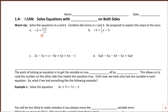Now that we've got a pretty good handle on how to solve one and two-step equations, we're going to take a look at some that are a little bit more complicated. So in section 1.4, the 'I can' statement is: I can solve equations with variables on both sides. All of these equations are going to have variables on both sides, and we're going to start with a warm-up that goes over some of the basic ideas we've talked about before.